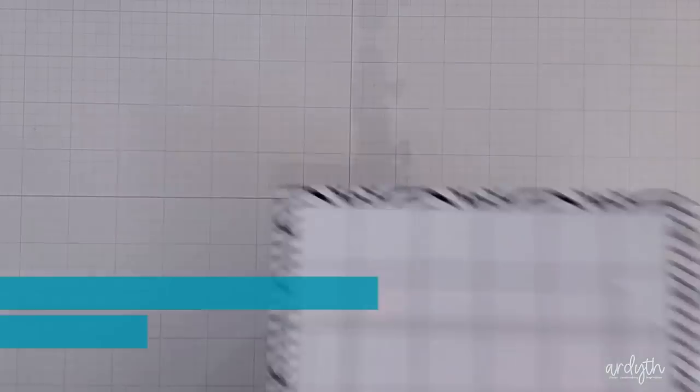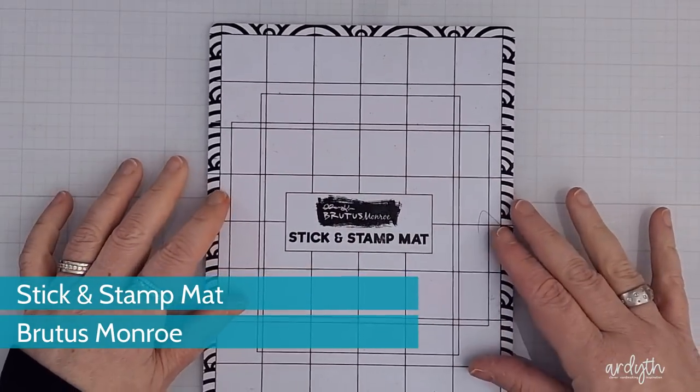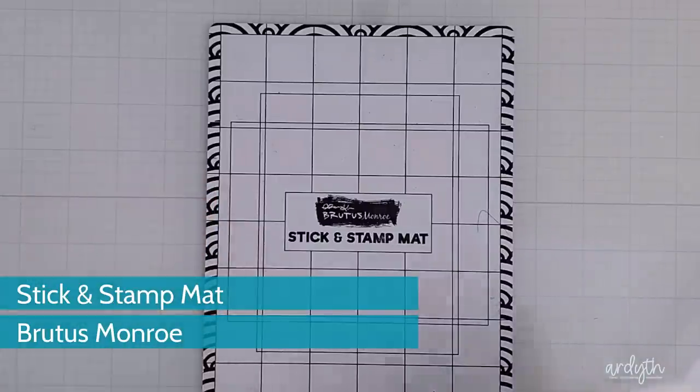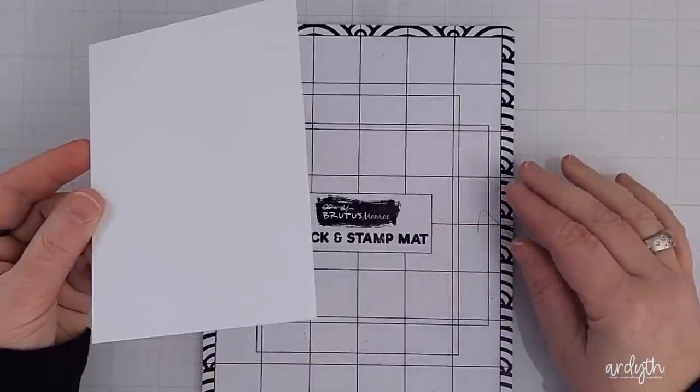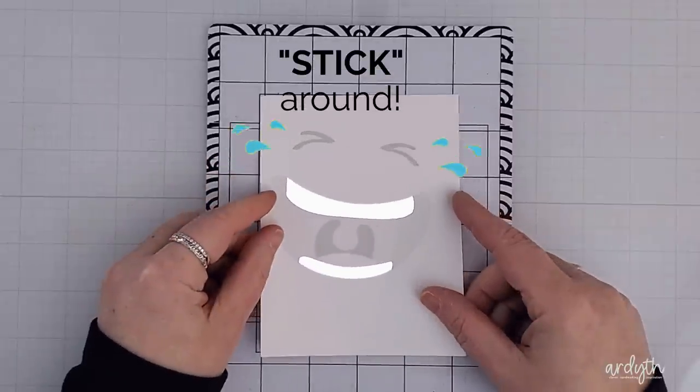Today I'm also trying out my new stick and stamp mat from Brutus Monroe. It's a sticky mat that holds your paper and your stencil in place and I've got some tips for using it, so stick around for those. Get it?